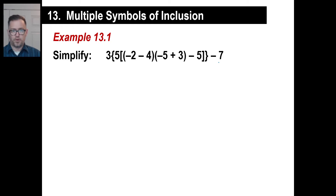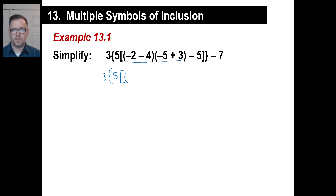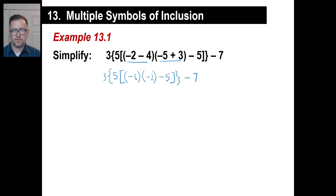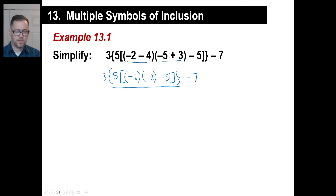We're going to do the same kind of attack on this next one — pause and copy it. I'll rewrite the 3, the fancy bracket, the 5, and the regular bracket. Inside here, we do negative 2 minus 4, which is negative 6. That is being multiplied by negative 5 plus 3, which is negative 2. Then we have minus 5 in the fancy bracket and minus 7. We're still working inside these parentheses, working our way outward.